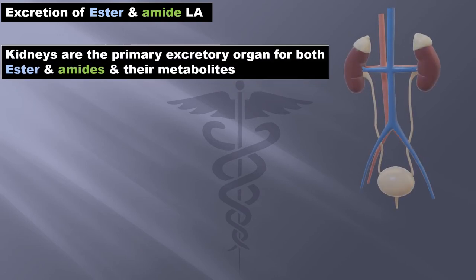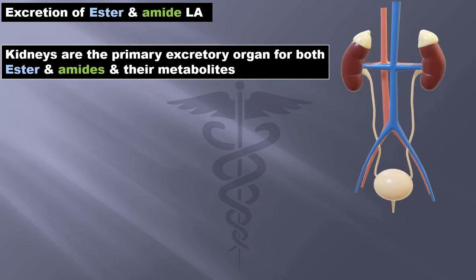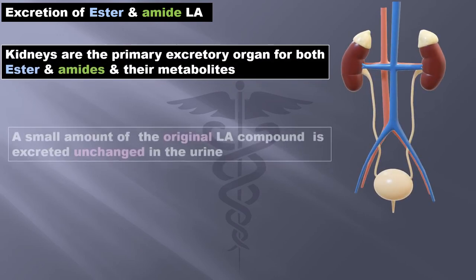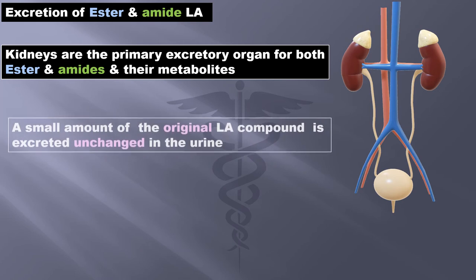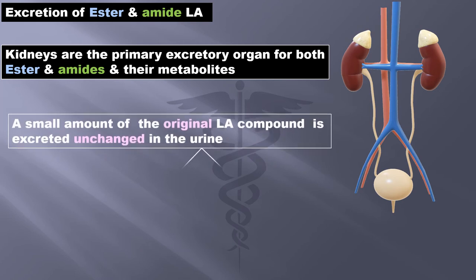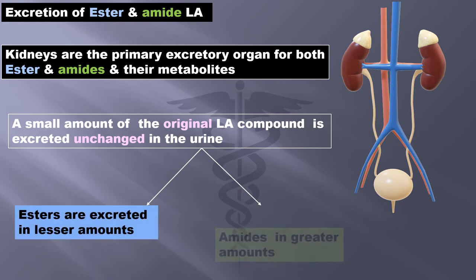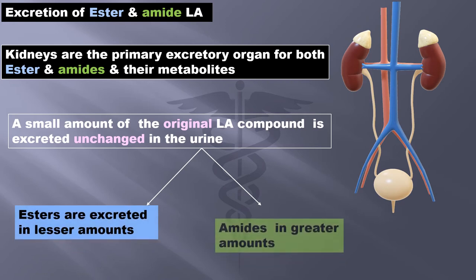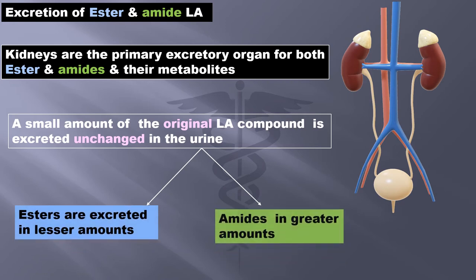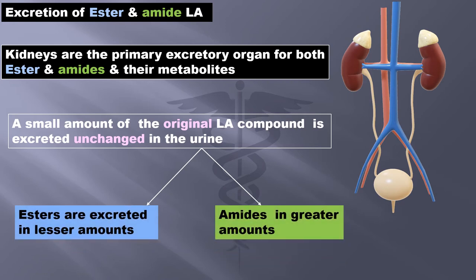Kidneys are the primary excretory organ for both esters and amides and their metabolites. A small amount of the original LA compound is excreted unchanged in the urine. Esters are excreted in lesser amounts and amides in greater amounts.